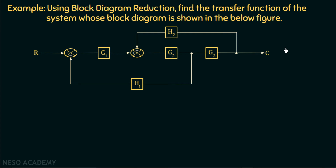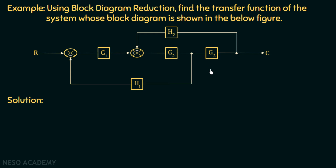I recommend you go through all the block diagram reduction rules before moving on to this example. Moving on to the solution: firstly, we need to observe this block diagram representation and think from where we can start the problem. Block diagram reduction is a step-by-step approach, and if we pick the correct point at the very first step, it makes the problem very simple.